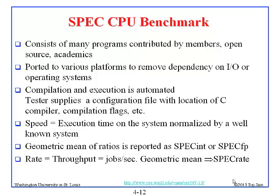That system of normalization continues today, though the reference system has changed. Basically, you take the time on your system and the time on the VAX. Spec int measures integer performance. So if you get a spec int of 3, that means your system is 3 times faster. If it takes 3 seconds on your system and 1 second on the VAX, performance will be one-third — so speed is a higher-is-better metric.